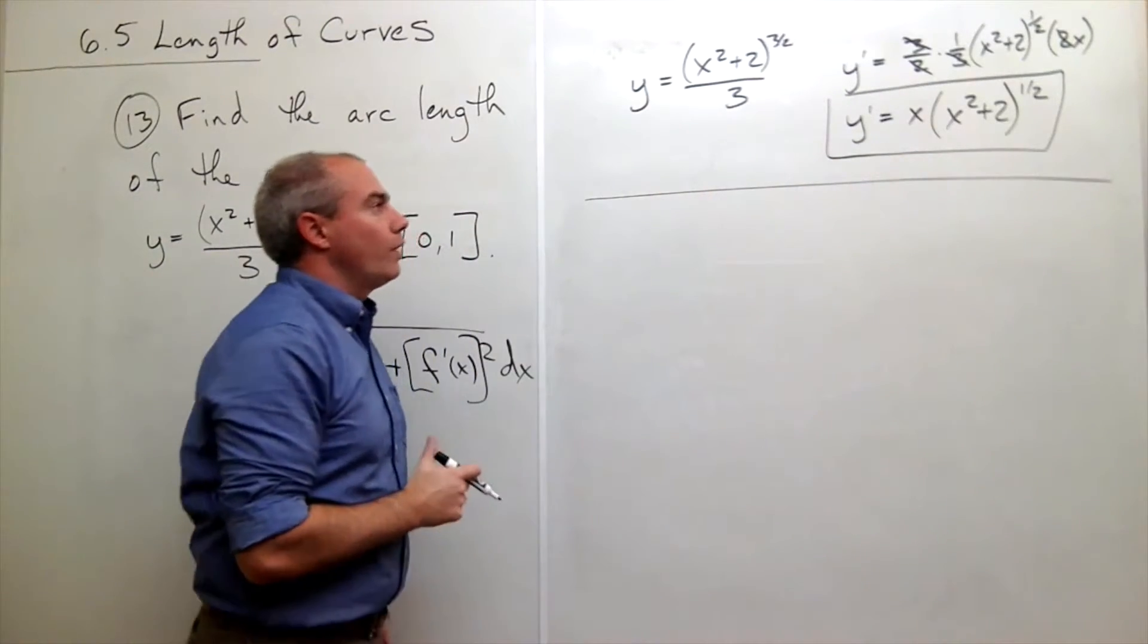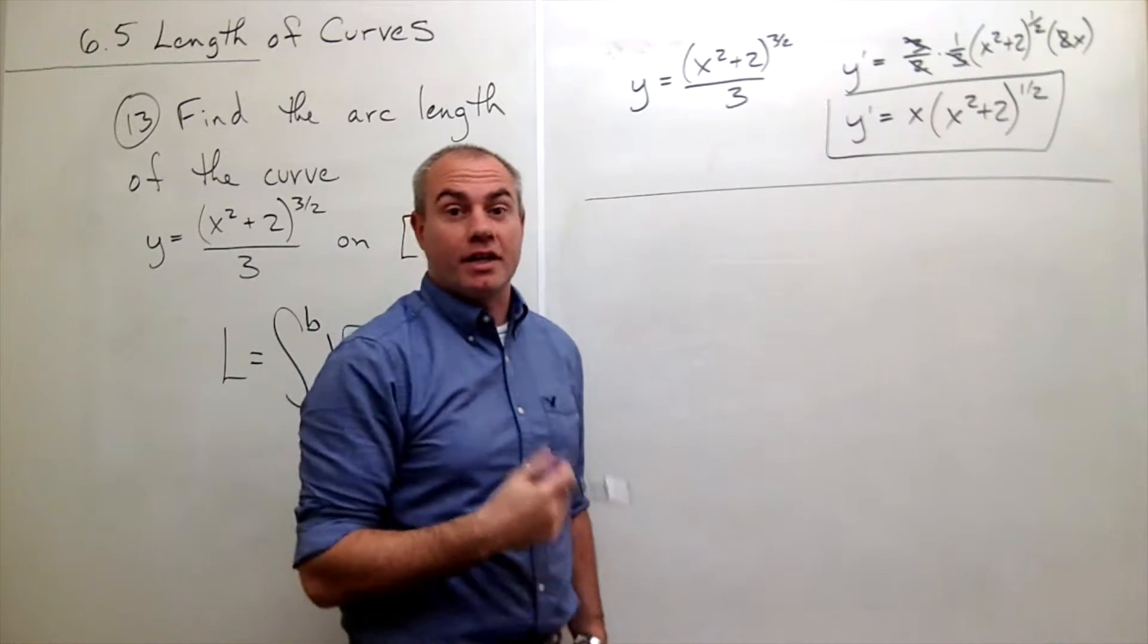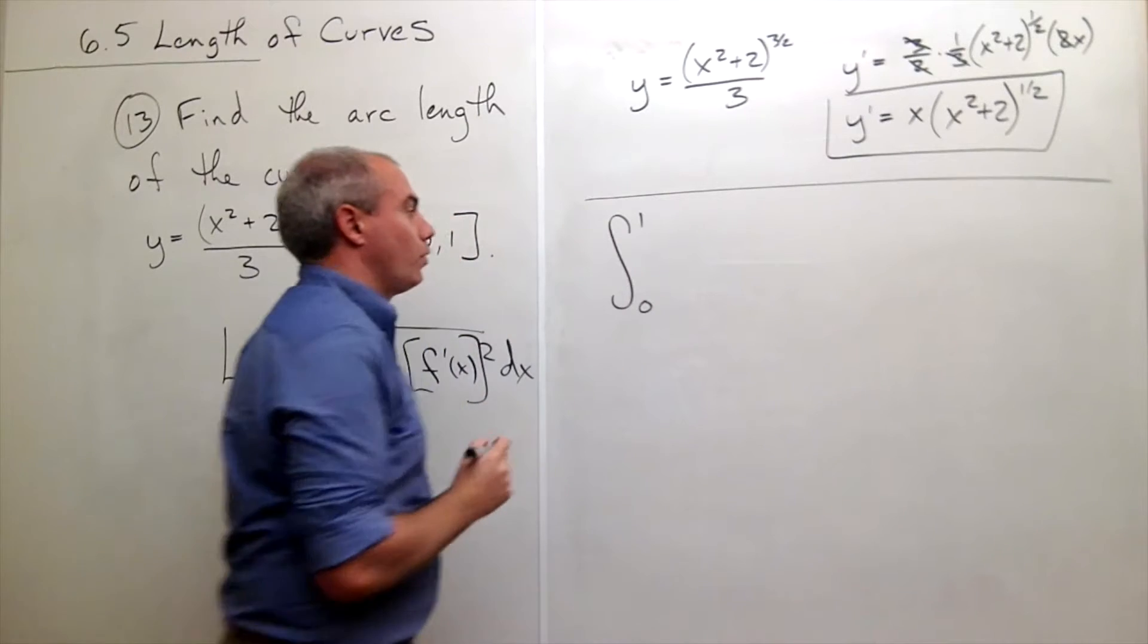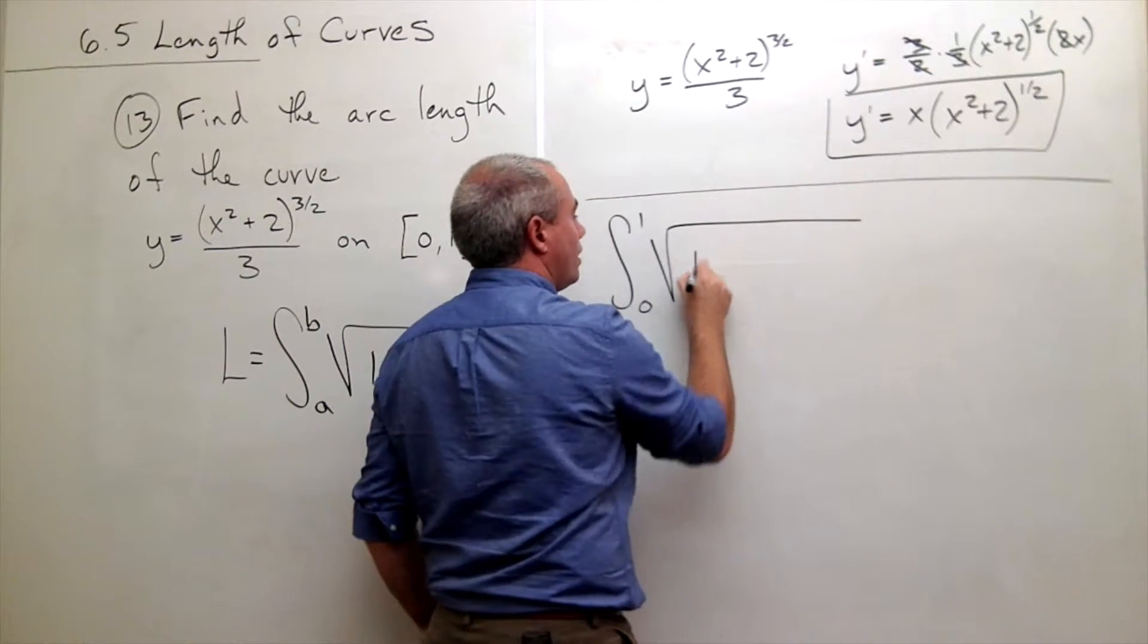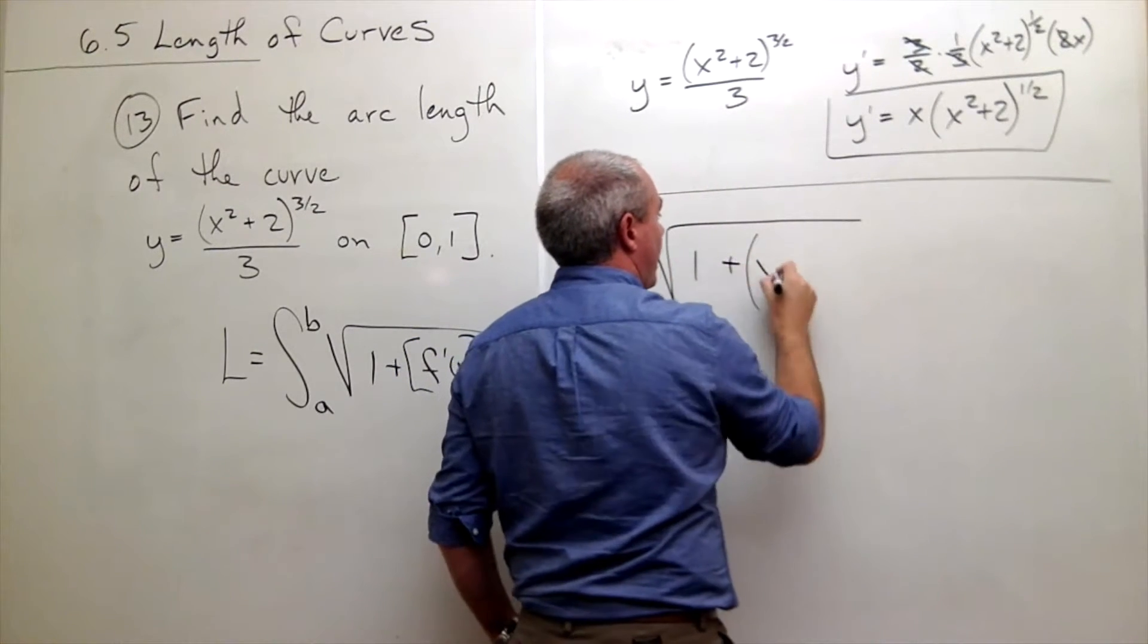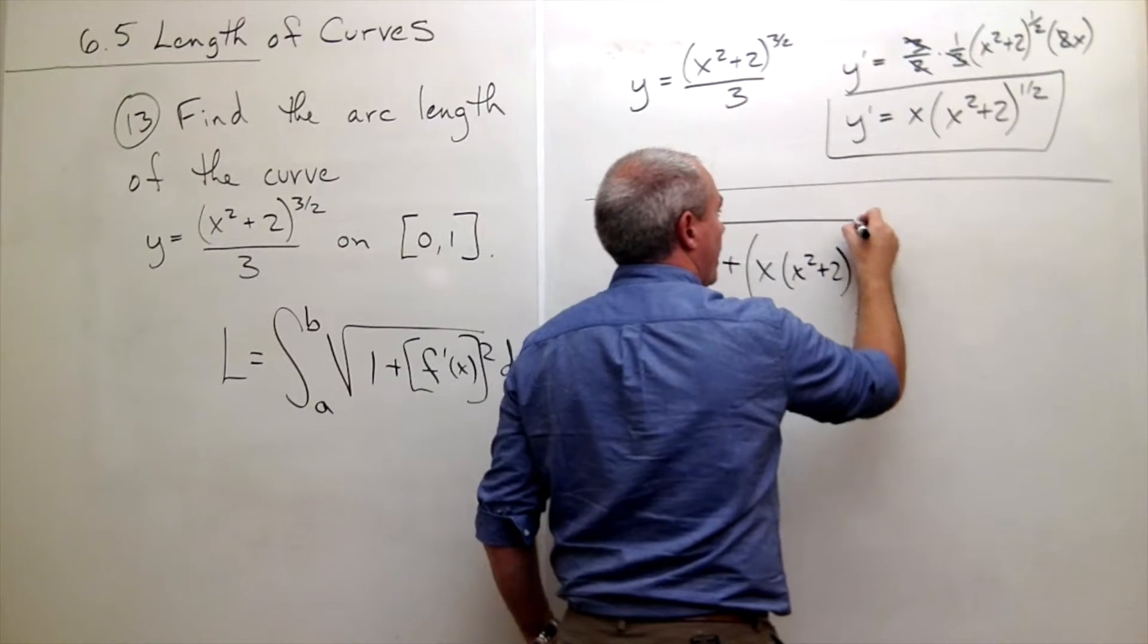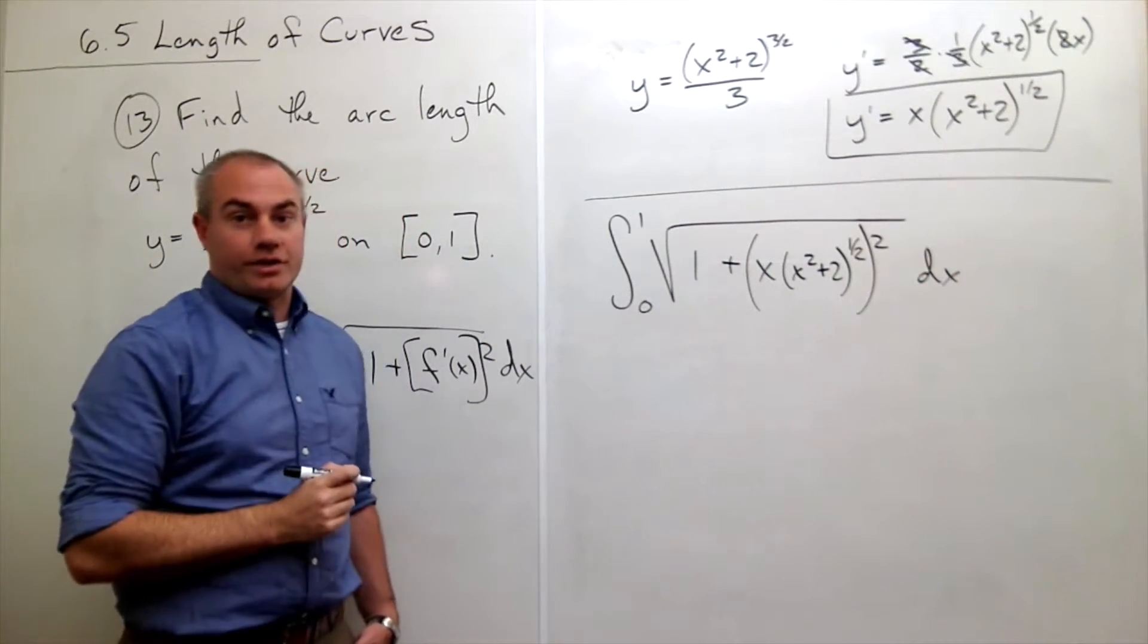Now that we know what the derivative is, we can plug that into our equation for arc length and get an integral that will give us our value. So our integral, we know we're integrating on the interval from 0 to 1. Then we have square root of 1 plus the derivative, which we have right here, x times x squared plus 2 to the 1 half squared dx. So this is the integral that will get the job done for us.